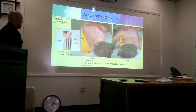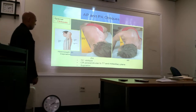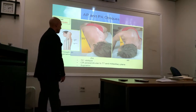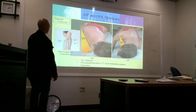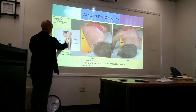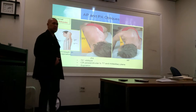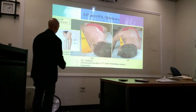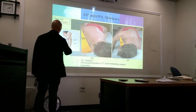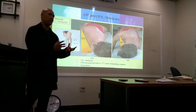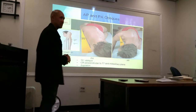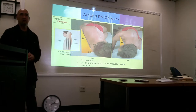The central ray is going to be perpendicular to T7 and the mid-axillary plane. The mid-axillary plane is just where the arm attachment is — not to be confused with mid-coronal, which is going to be slightly more towards the anterior part. Mid-axillary is where the arm attachment is. Just get it down the middle.